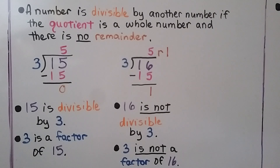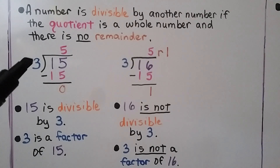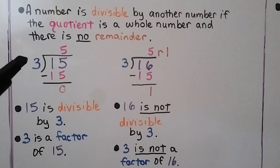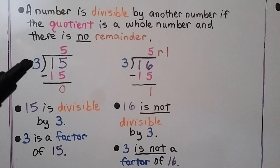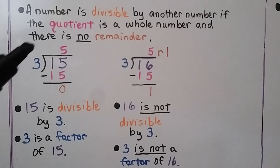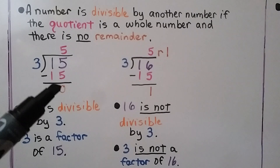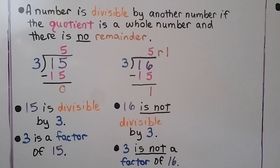A number is divisible by another number if the quotient is a whole number and there is no remainder. Is 3 a factor of 15? Is 15 divisible by 3? Well, 3 fits into 15 five times — 3 times 5 is 15. We subtract and get 0. So 15 is divisible by 3, and 3 is a factor of 15. There's no remainder.